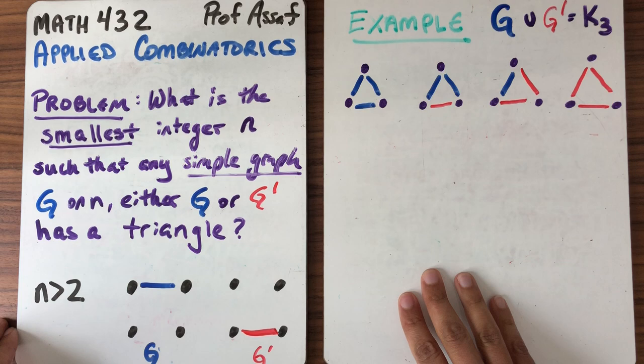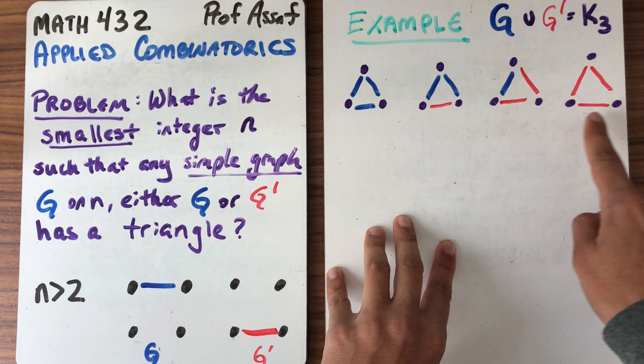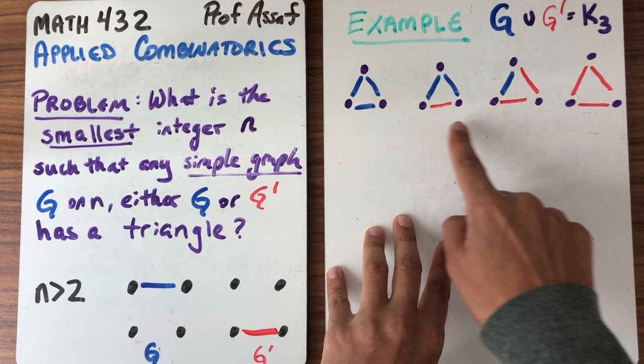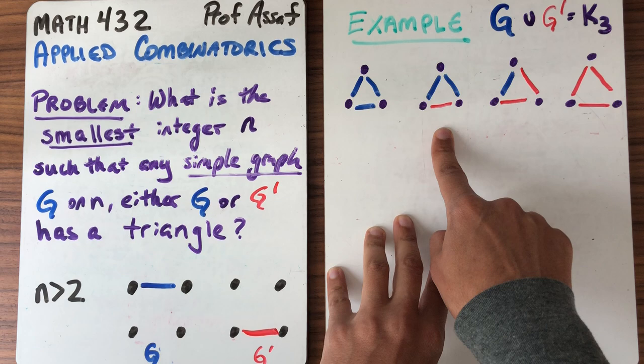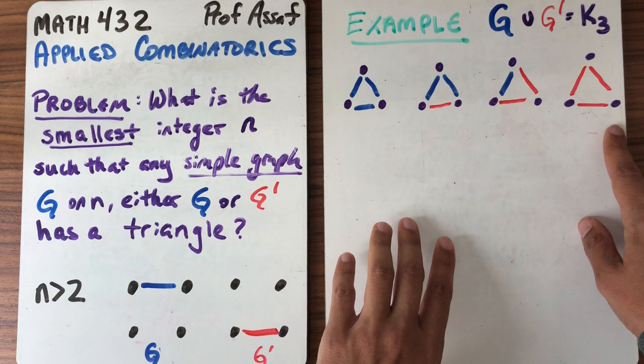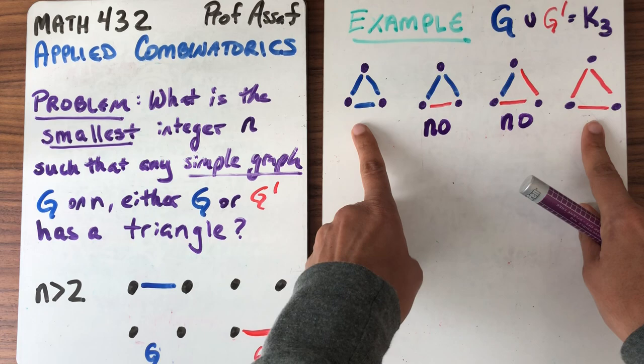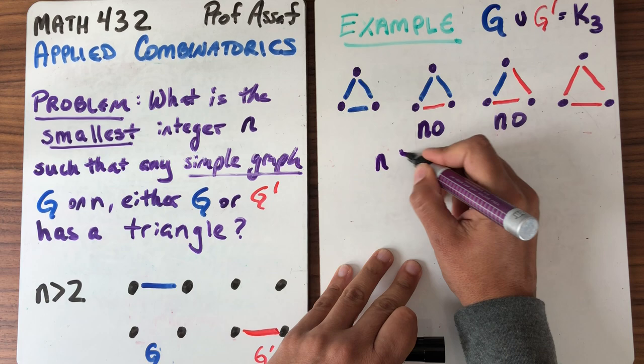Let's look at n equals 3. Is it true that for every simple graph on three vertices, either the graph or its complement has a triangle? So here I've drawn all simple graphs on three vertices. This is the graph with no edges. Here I'm thinking of the blue edges as g. These are the two connected graphs on three vertices up to isomorphism. By drawing g and g prime together, I get the complete graph K3. Is it true that every one of these graphs either has a blue triangle or a red triangle? Well, of course not. So half the time we get a triangle and half the time we don't. This tells us that the n we're looking for is bigger than 3.